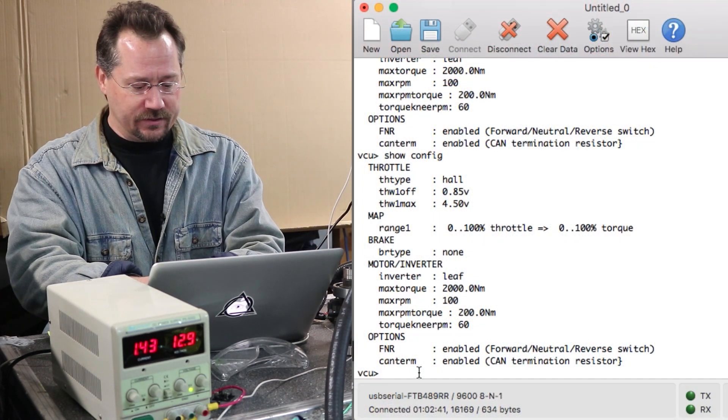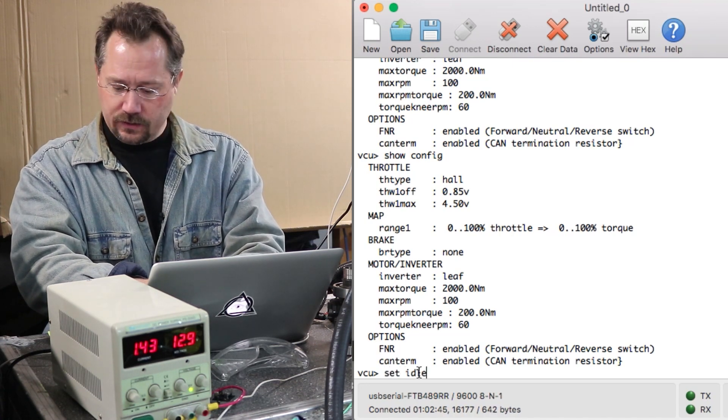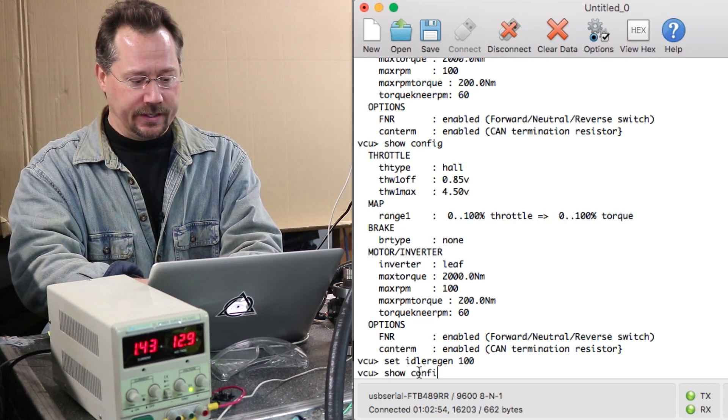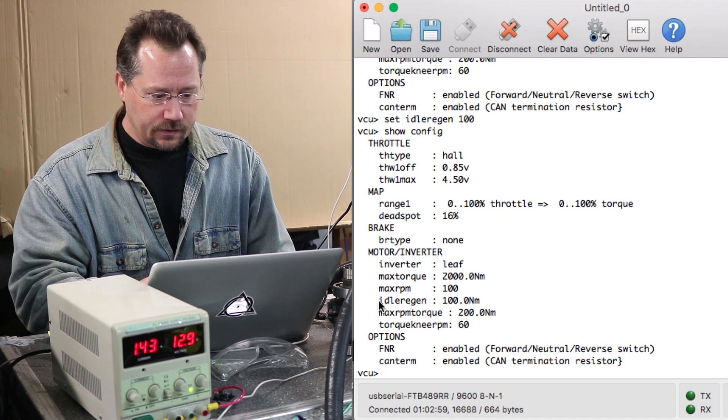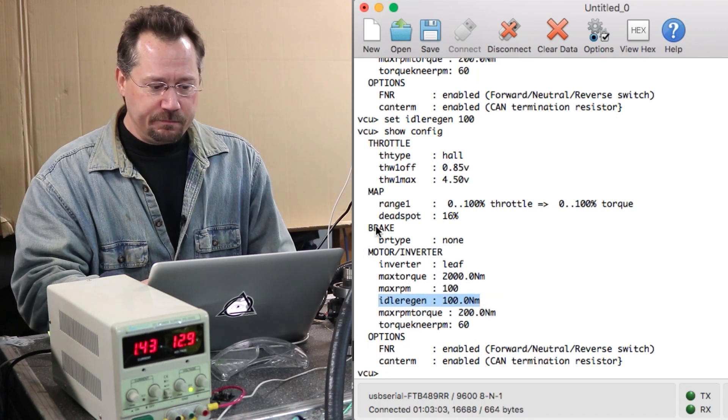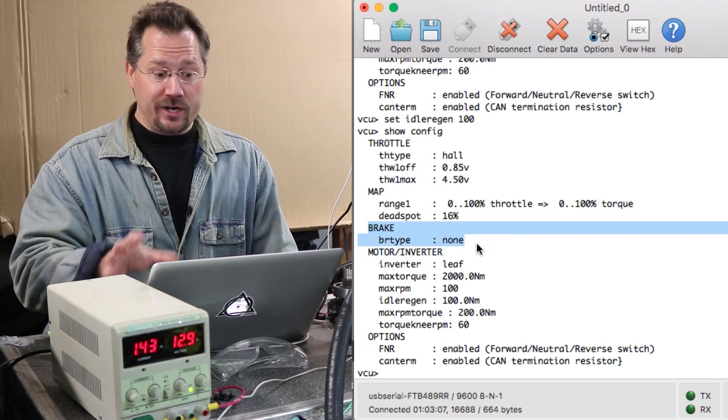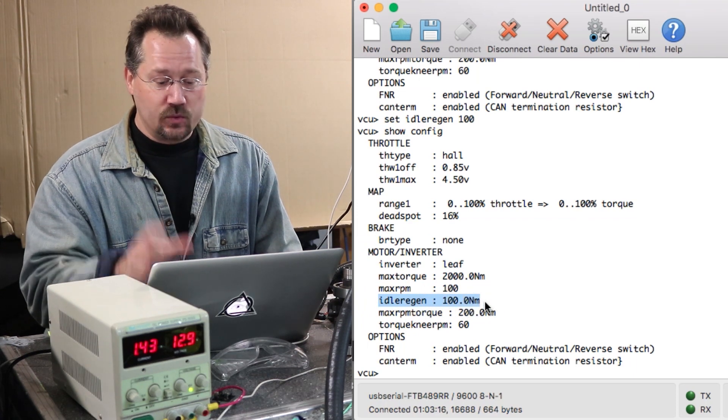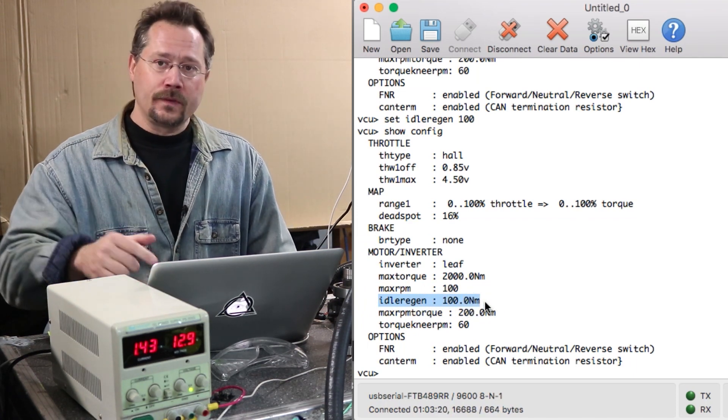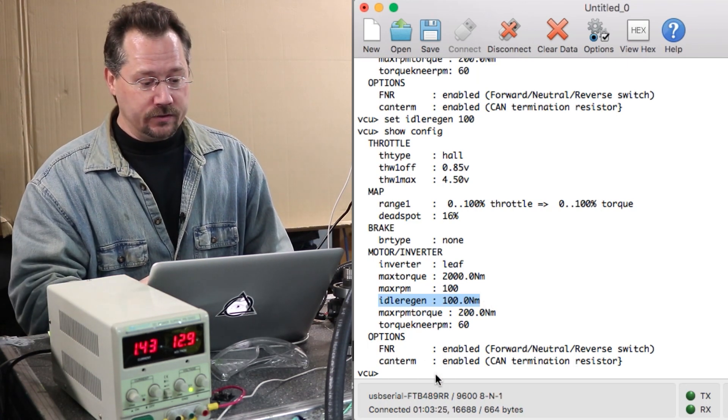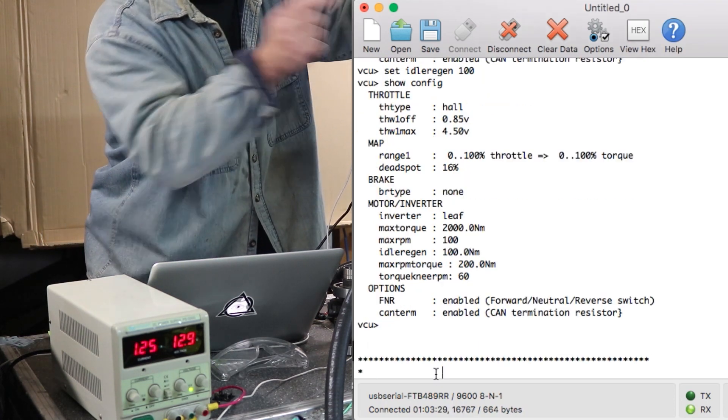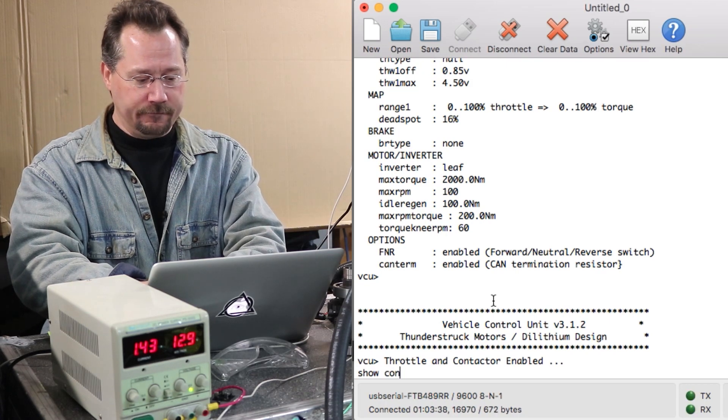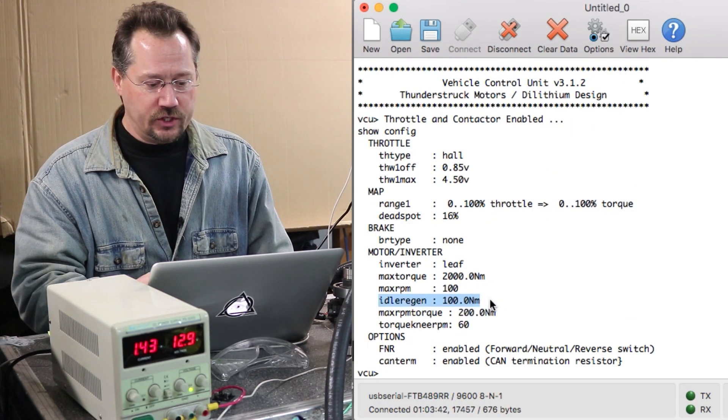But let's take a look at this idle regen command. So we'll do set idle regen and then we'll give it a number of newton meters, let's just say 100 and we'll show the configuration again. Here we go, right down here, instead of being under brake we've got no regenerative braking set up with brakes but we do have regenerative braking set up associated with this idle regen command. So essentially that just means when you're not pressing the accelerator how much regenerative braking is going to be going on. So I've got it set to 100 newton meters, I'm just going to double check here, looks like I got a cycle power to the VCU here, check everything, just do a show config again. Okay there's our idle regen at 100 newton meters.